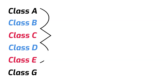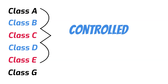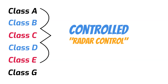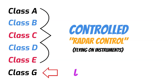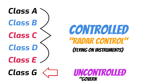Classes A through E are controlled airspace. This means we can receive radar services from ATC, and if we're receiving those services, we're under radar control. We will use these services too, but they're specifically designed to keep people who are flying on instruments safe. Class G airspace is uncontrolled airspace — you can remember this by thinking G for government-free. Aircraft in Class G airspace are typically not under radar control. Now, let's take a quick look at each one of these.